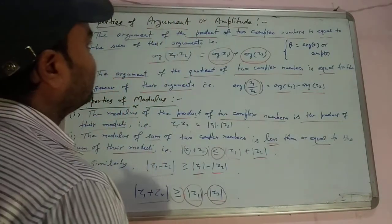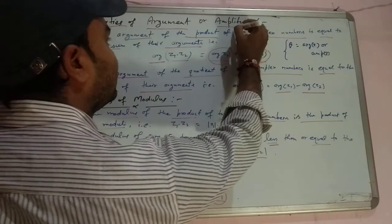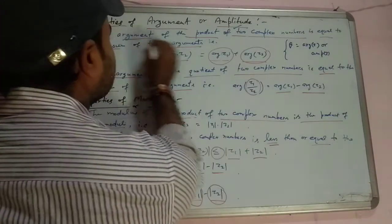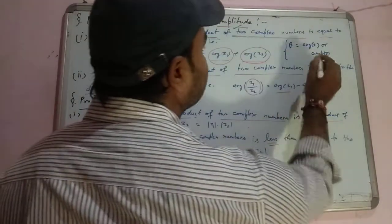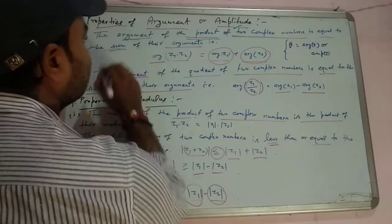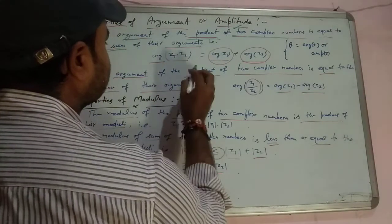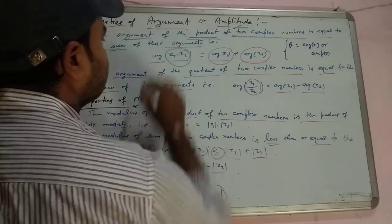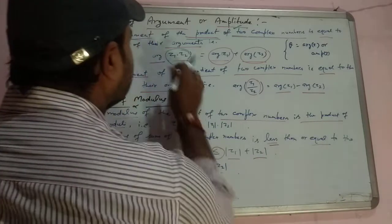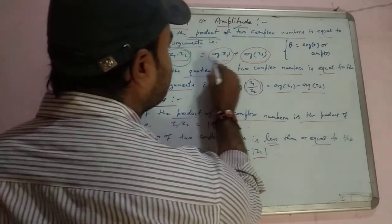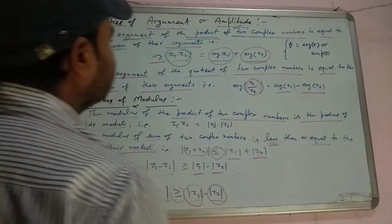Properties of argument or amplitude: the argument of the product of two complex numbers is equal to the sum of their arguments. This is the product of complex numbers, argument equals argument of z1 plus argument of z2.